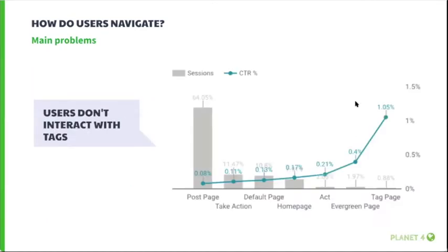Another important problem is that users don't interact with tags — only 0.3 percent of sessions interact with navigation tags, mostly from tag pages. Tags are most often clicked in page headers and article blocks, but the click-through rate remains below 0.1 percent. Some users might not identify tags as a navigational element, especially on mobile where they are very small. Internal P4 users interviewed say that tags even confuse editors sometimes — they don't always know how to use them in the taxonomy.